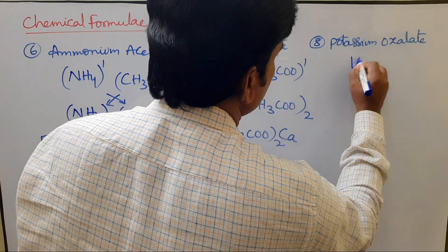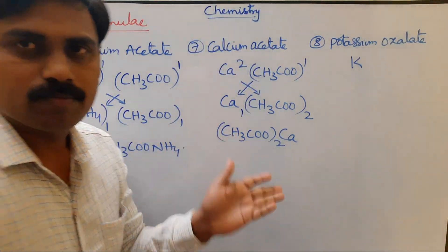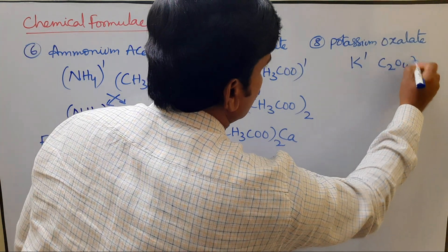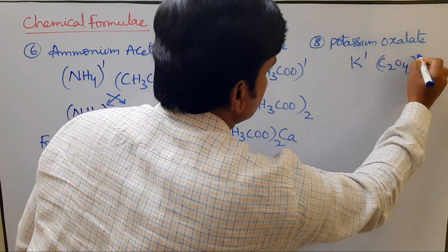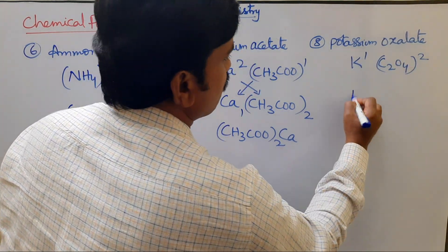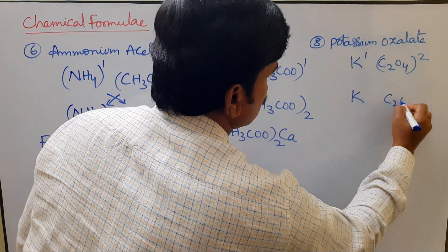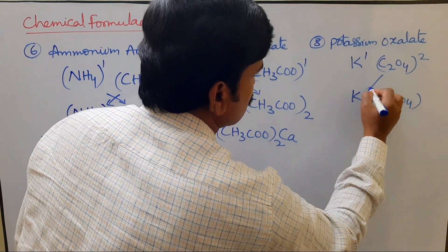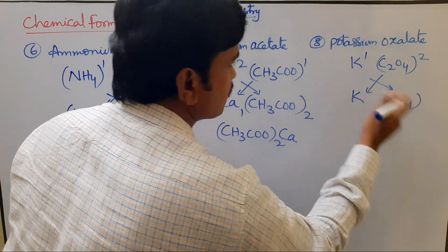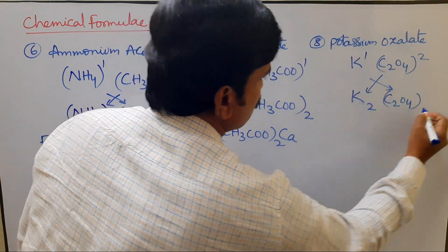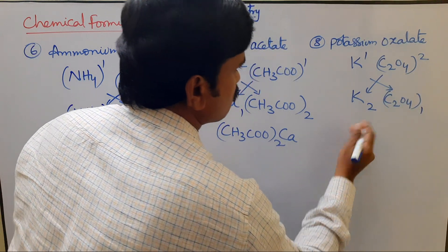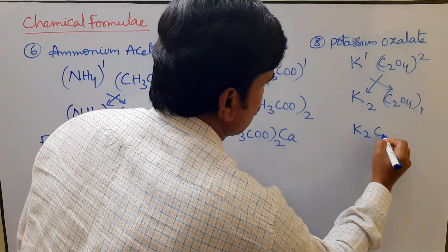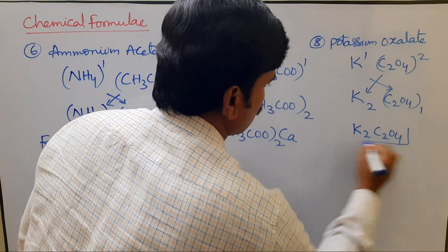Potassium oxalate: potassium is a mono-positively charged ion with charge 1, and oxalate ion C₂O₄²⁻ has charge 2. Criss-crossing these charges gives the formula K₂C₂O₄ for potassium oxalate.